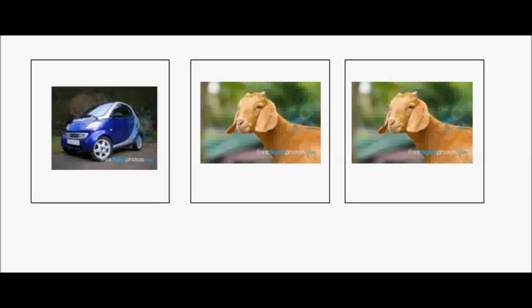The answer is it's better to change. After the host has revealed a goat behind one of the other two doors, it's better to change to the final third door. You're actually twice as likely to win by changing as you are by staying with your original choice. I'm going to show a mathematical reason behind why this is the case. If you want to search for some more visual reasons, I'm sure you'll be able to find them.